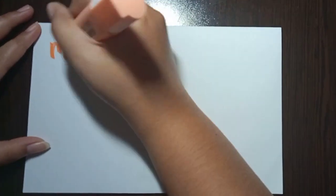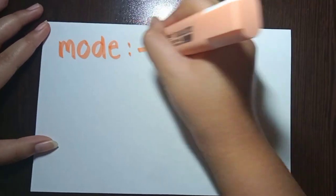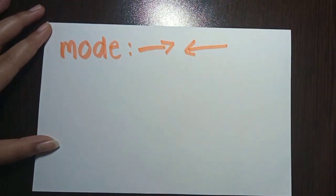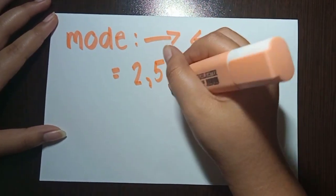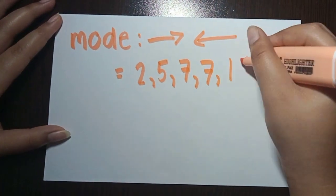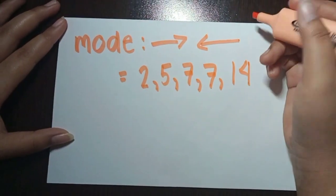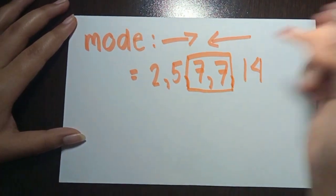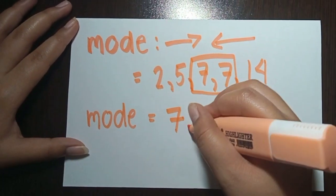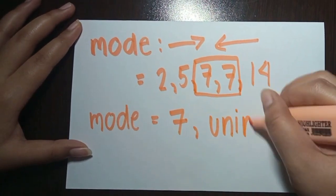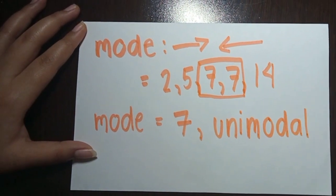Next, we are going to determine the mode of the set of data. In determining the mode, we need to arrange the values ascendingly or descendingly — I arranged this set ascendingly. After that, we look for the value that is being repeated. In this set of data, 7 is the only repeated value. Therefore, 7 is the only mode, which tells us that this set of data is unimodal. Now let's proceed to the second problem.